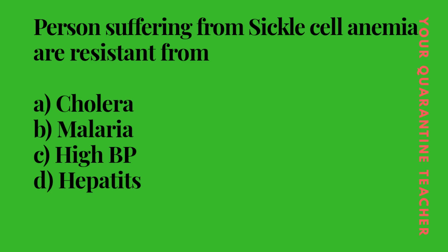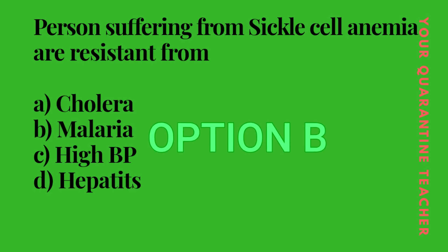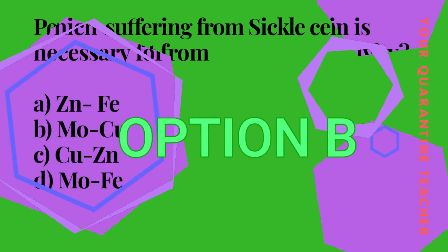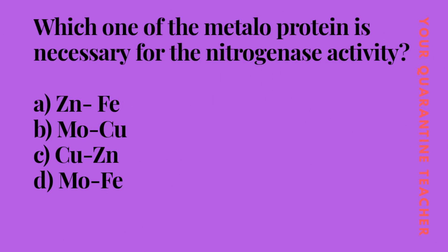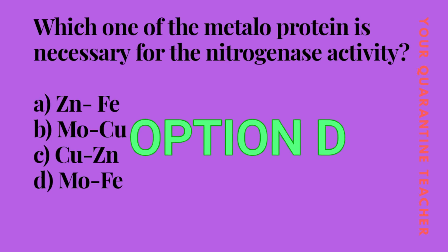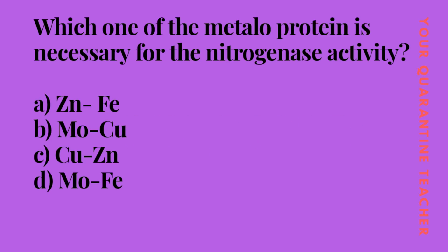Option A Cholera, Option B Malaria, Option C High blood pressure, Option D Hepatitis. Option B Malaria is the correct answer. Then, which metal pair is necessary for Nitrogenase activity? The answer is Option D: Molybdenum and Iron combination.